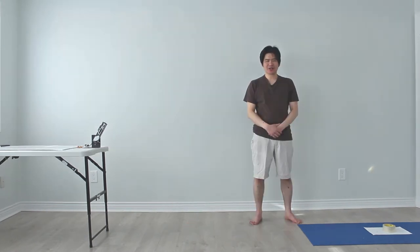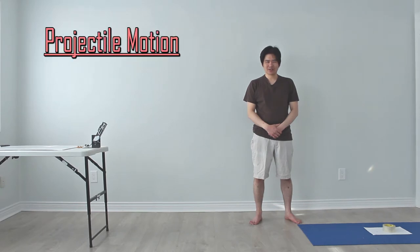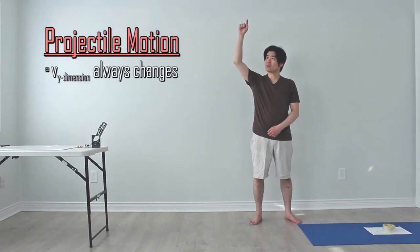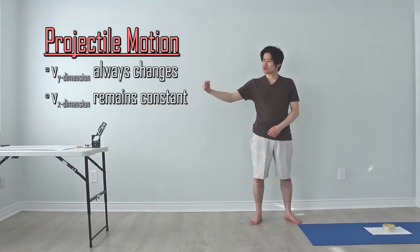In today's episode, we'll be talking about projectile motion. Something to keep in mind about projectile motion is that even though the object may speed up and slow down while going up and down, while it travels across, it maintains the same speed.